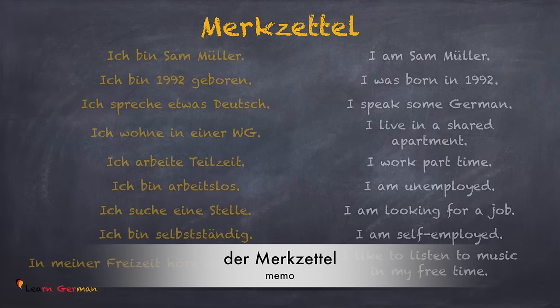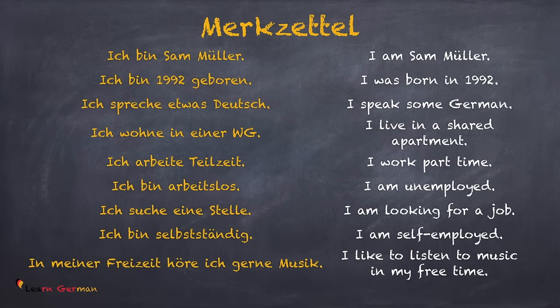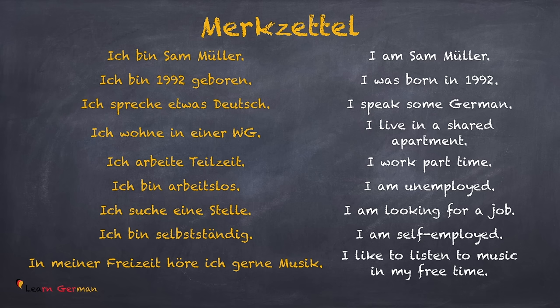Und hier ist dein Merkzettel. Ich bin Sam Müller. Ich bin 1992 geboren. Ich spreche etwas Deutsch. Ich wohne in einer WG. Ich arbeite Teilzeit. Ich bin arbeitslos. Ich suche eine Stelle. Ich bin selbstständig. In meiner Freizeit höre ich gern Musik.